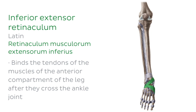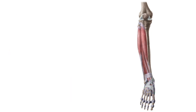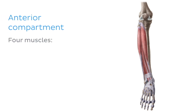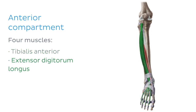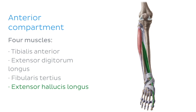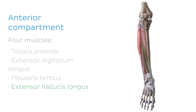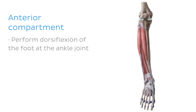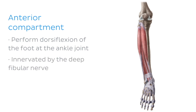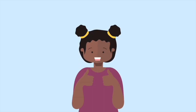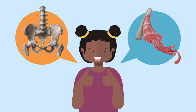In summary, the anterior compartment of the leg is made up of four muscles: the tibialis anterior, the extensor digitorum longus, the fibularis tertius, and the extensor hallucis longus. These muscles work together to perform dorsiflexion of the foot at the ankle joint, and they are all innervated by the deep fibular nerve.